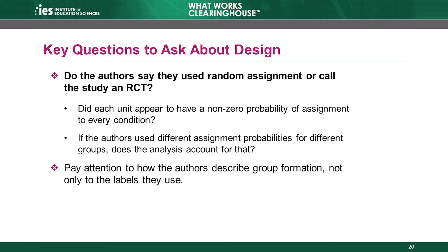We identified some key questions the WWC considers when reviewing a study design. The first question is: do the authors say they used random assignment or call the study an RCT?